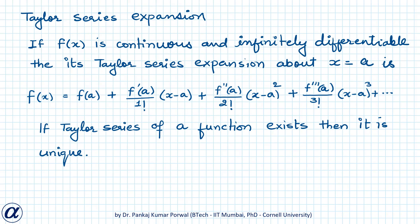In this session we are going to learn a shortcut method to find Taylor series expansion of various functions. If f(x) is continuous and infinitely differentiable, then its Taylor series expansion about x equals a involves terms with (x−a)², f triple dash of a divided by 3 factorial into (x−a)³, and so on — we can continue the same pattern infinitely.